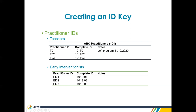For early interventionists, I used EI, so EI-01, 02, 03, and the complete ID includes the program ID followed by EI-01, 02, 03. The complete ID is really important. As a state data coordinator, if you receive a lot of data from different programs all using T01, T02, T03, it becomes an added effort to figure out which program each teacher belongs to. You want to make sure programs are using the complete ID when submitting data to the state or to the program implementation coach.